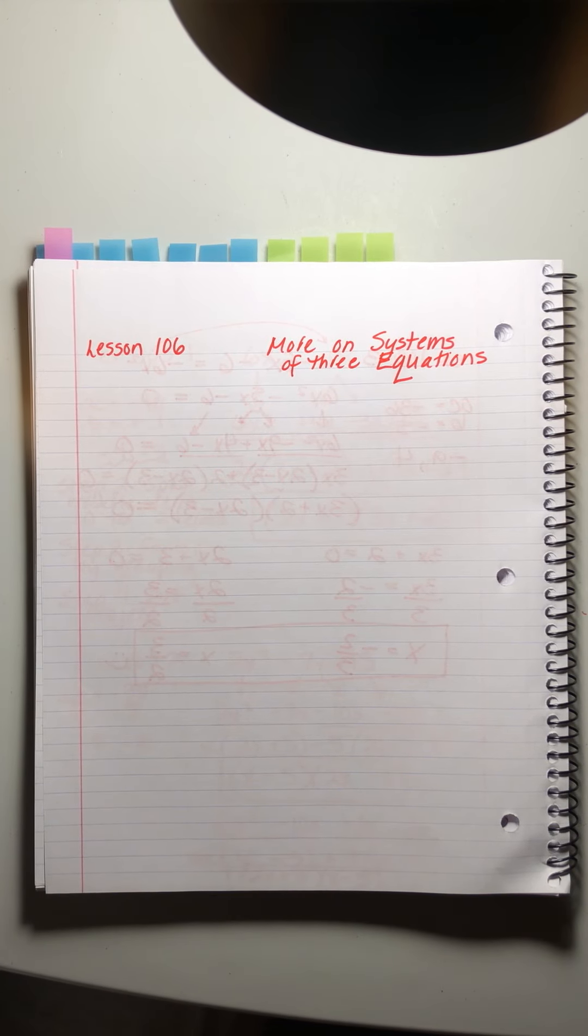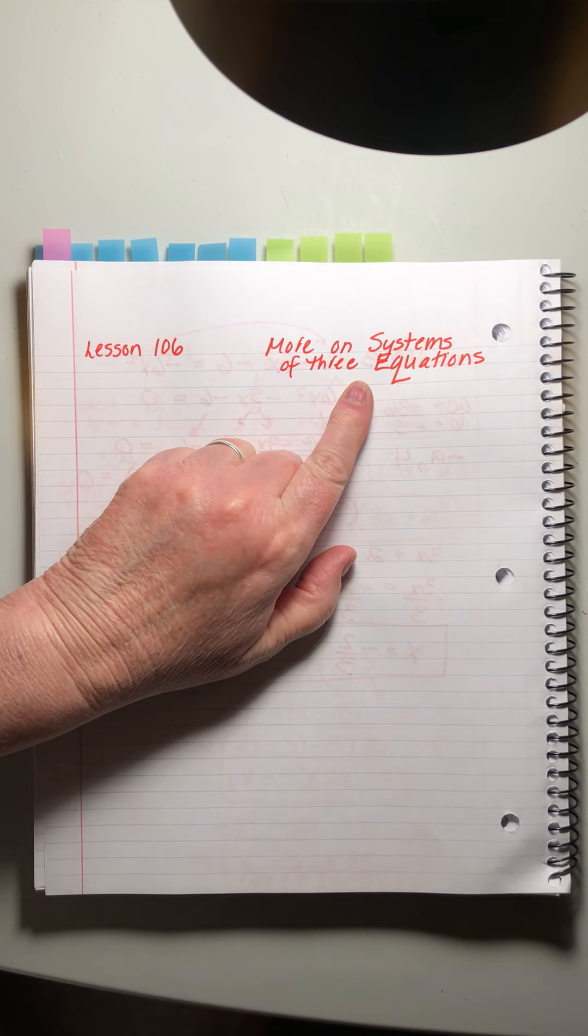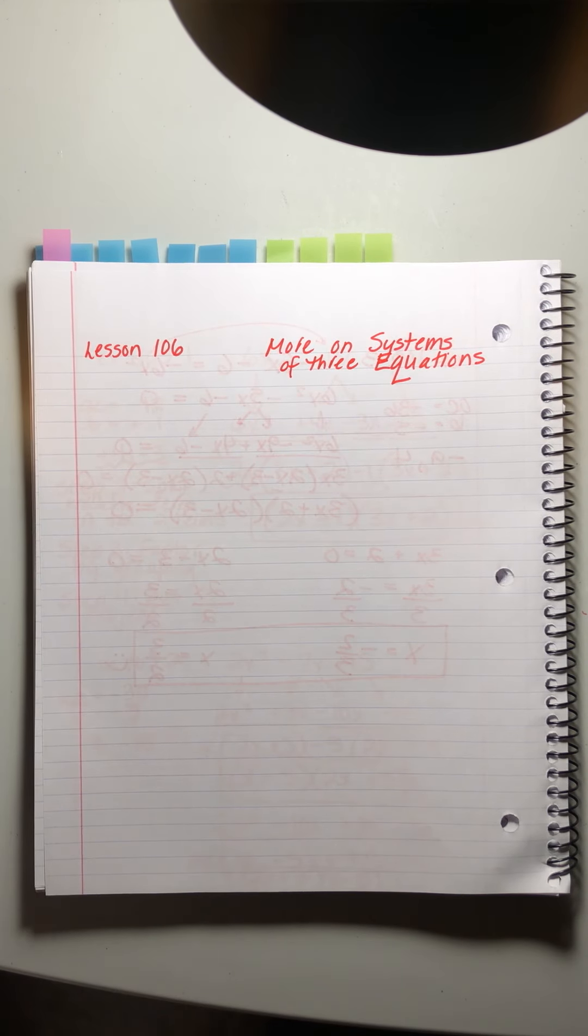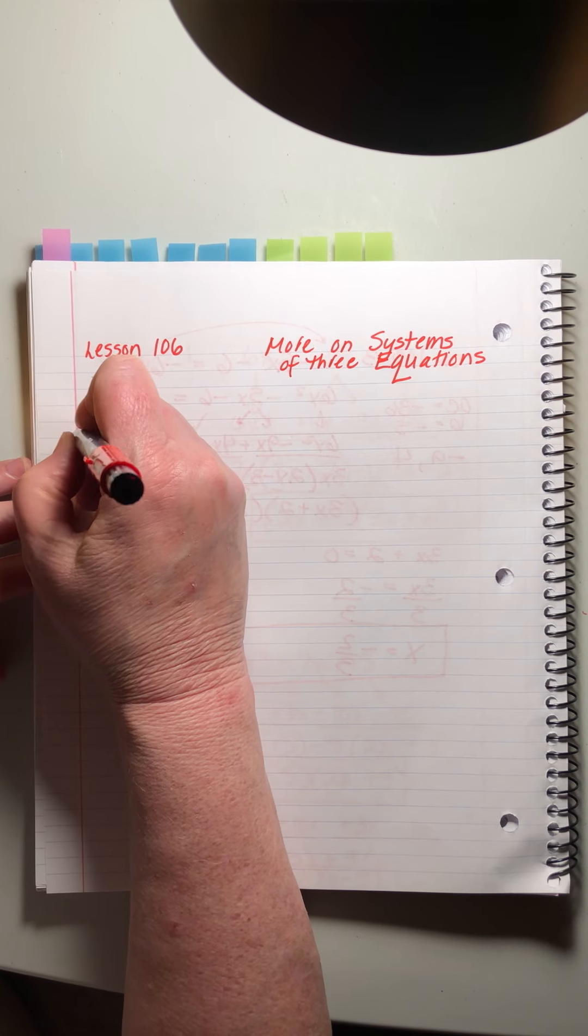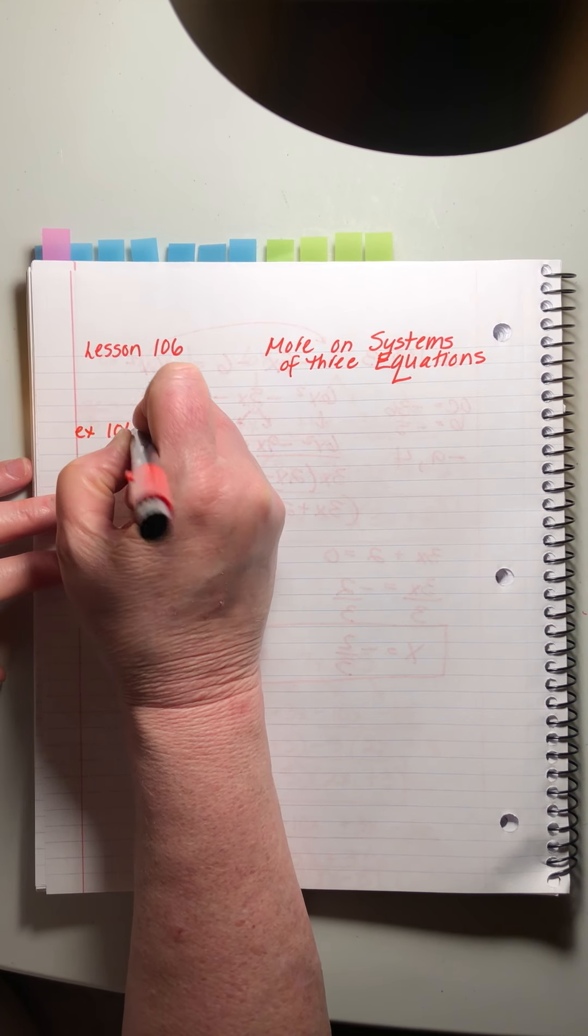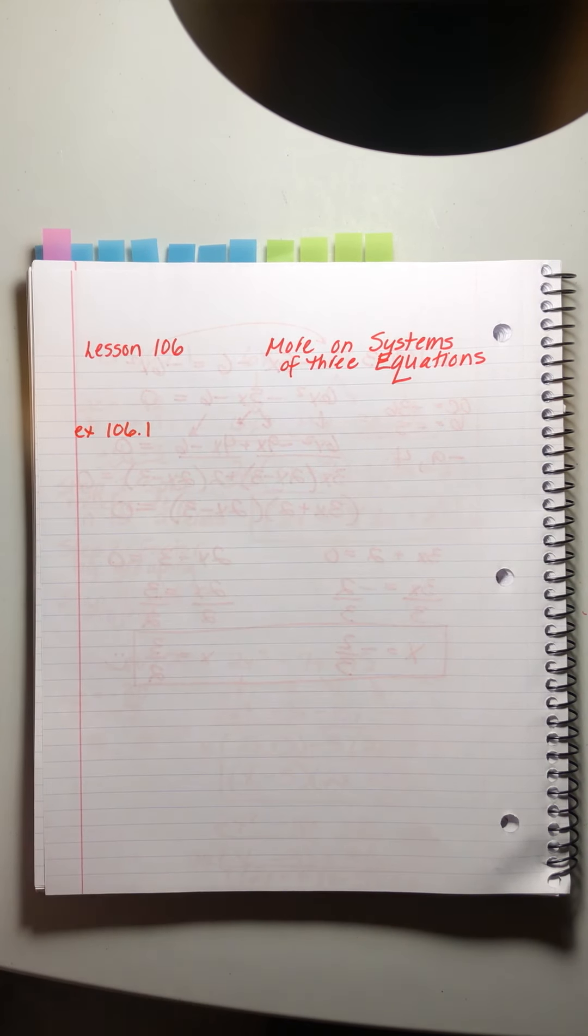Saxon Algebra 2, Lesson 106. We're going to talk about systems of three equations again. I know you loved them the first time and now they're going to be even better. We're going to jump right into the first example and I'm going to teach you what you need to know as we go.